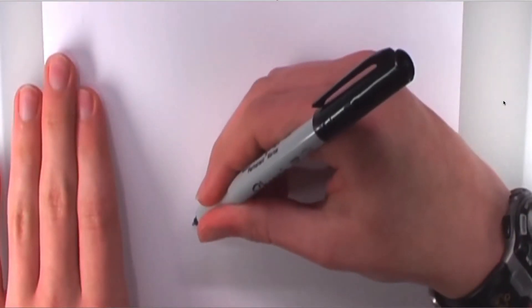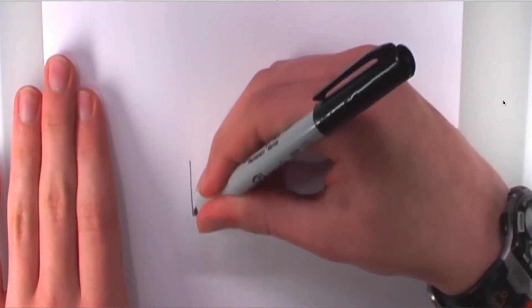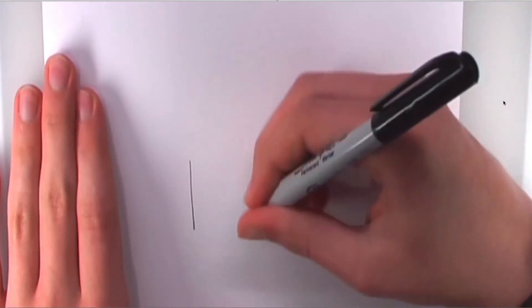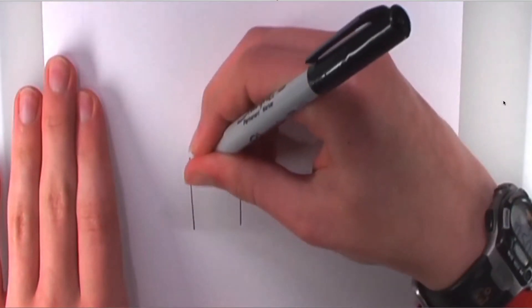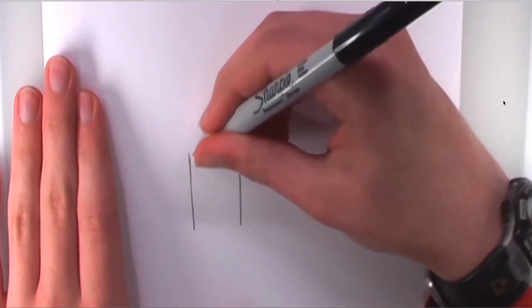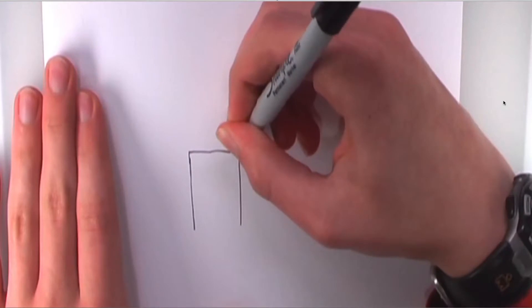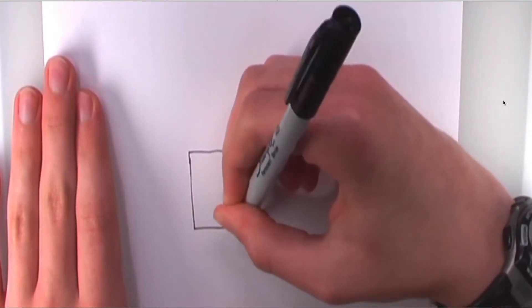Right about in the center, we're going to draw a vertical rectangle. The lines will be taller on the left and right, and a little shorter on the top and bottom. Like that.